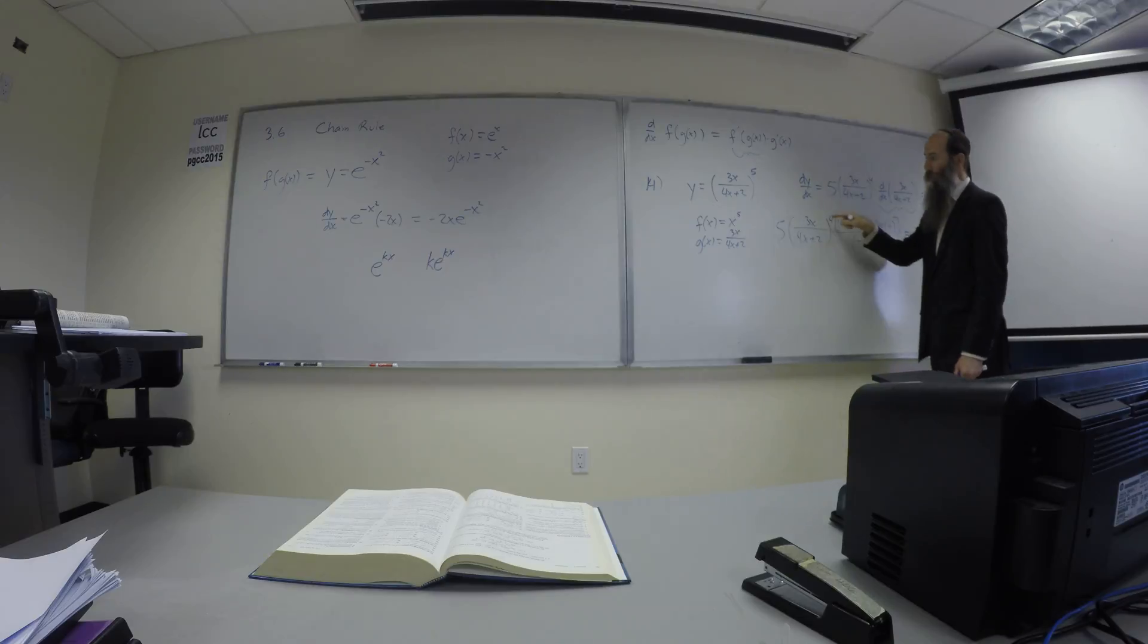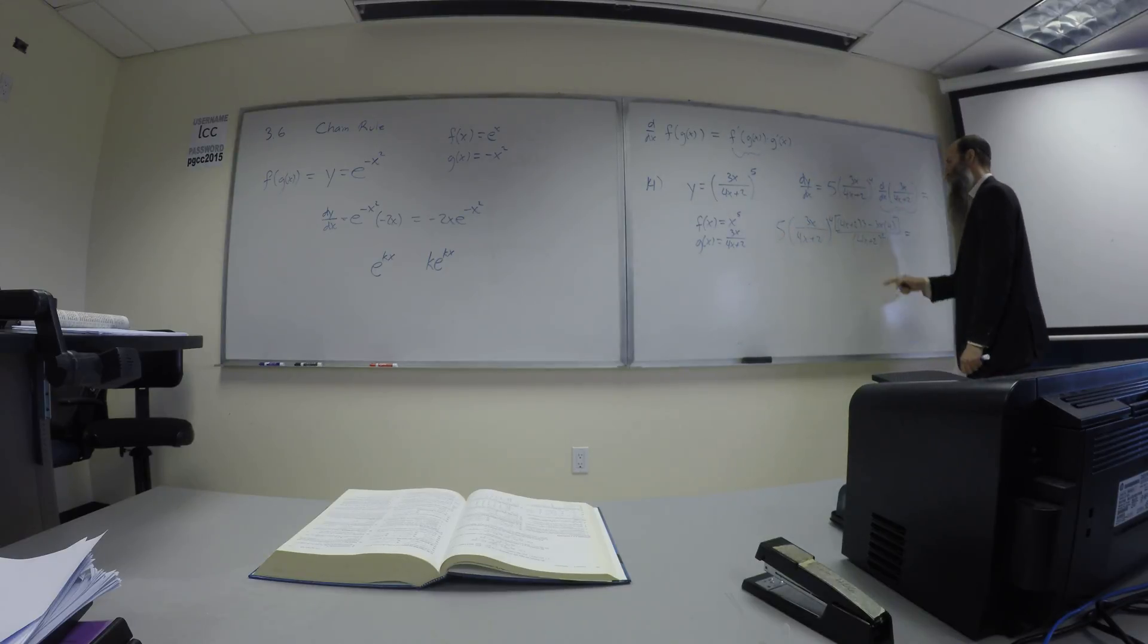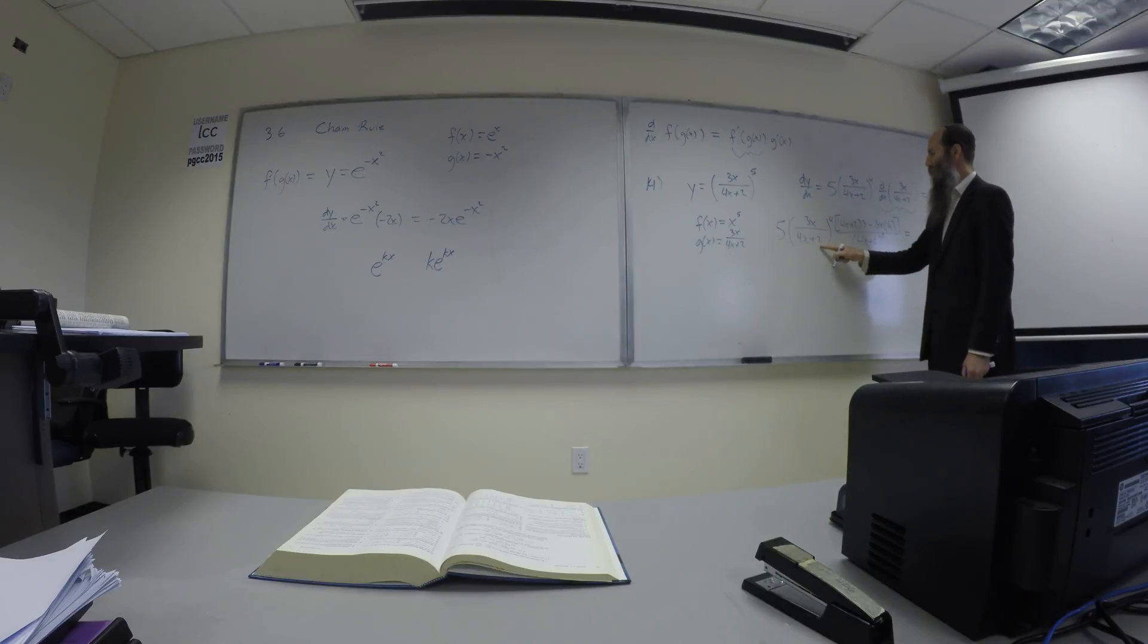That six can be combined with this five over here, right? That's a thirty. 4x plus 2 squared down here, this 4x plus 2 down here, this is to the fourth power, you can combine them together.